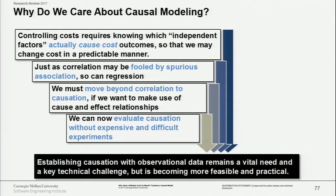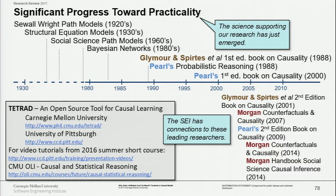Causal modeling works with observational data. As opposed to the randomized control trial, which is sort of the gold standard, you can actually take a dataset and discover the causal graph underlying that data. Causal modeling and latent variables go back over a century, but it's really been in the past three decades that we now have more than a couple dozen causal discovery algorithms, and a lot of the researchers are here at Carnegie Mellon and the University of Pittsburgh.